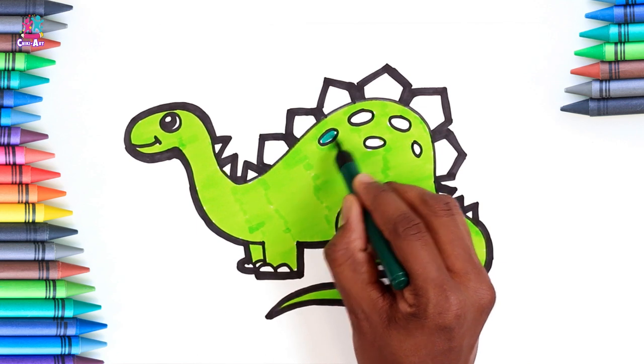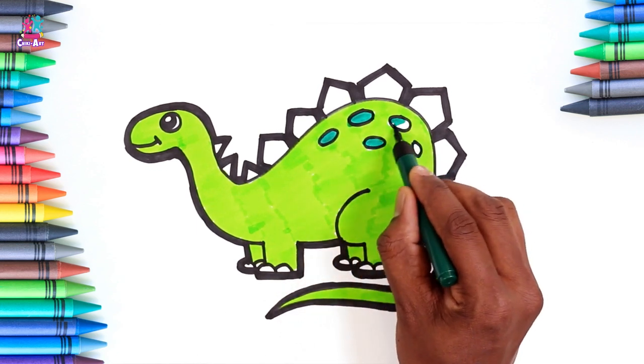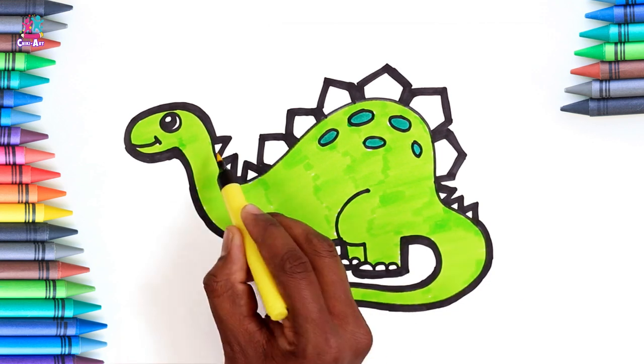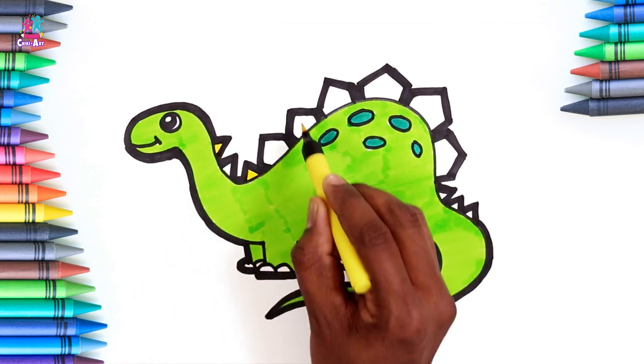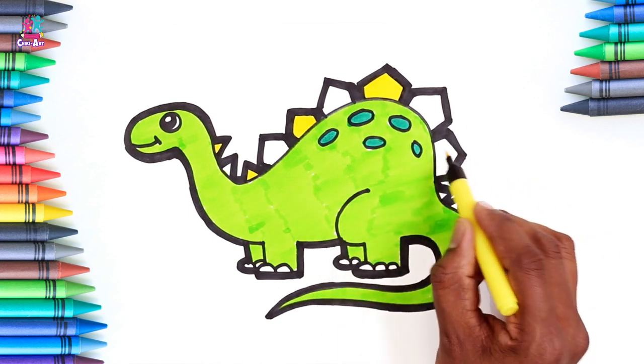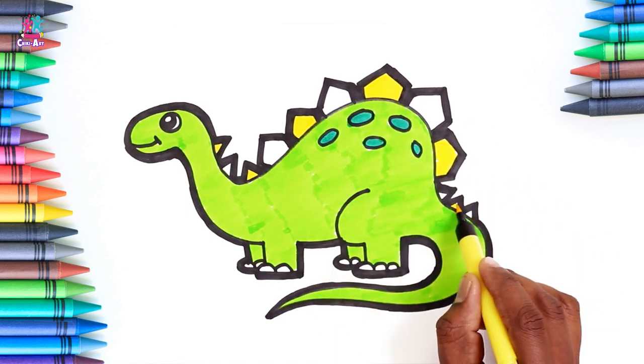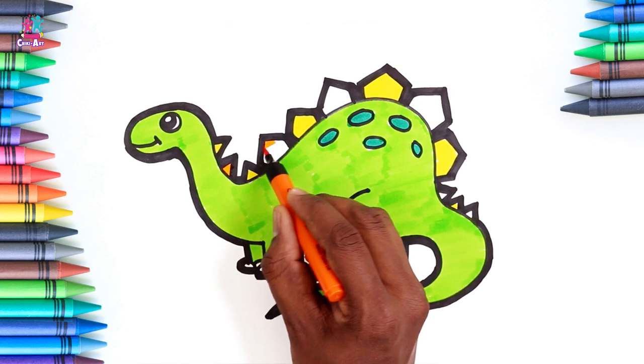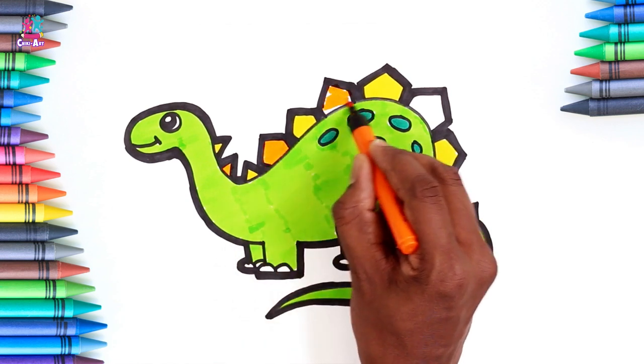So we're doing dark green for the spots. And now we're coloring in every other spike yellow and orange in between. Orange and yellow. Lovely citrus colors. It's a very citrusy dinosaur.